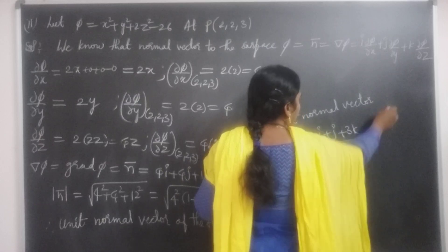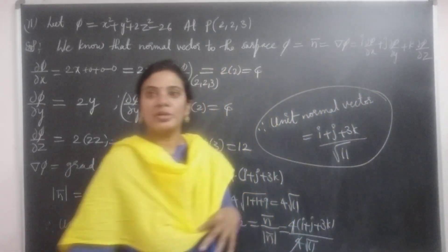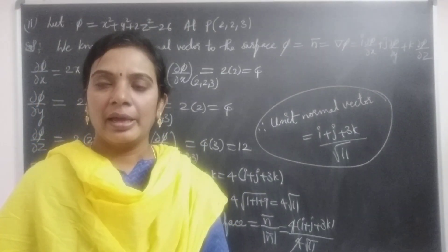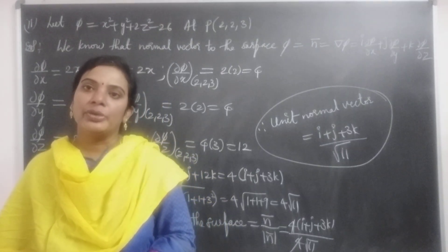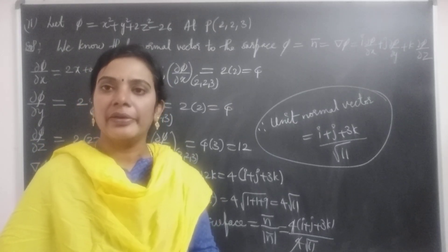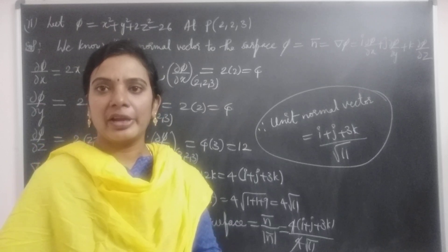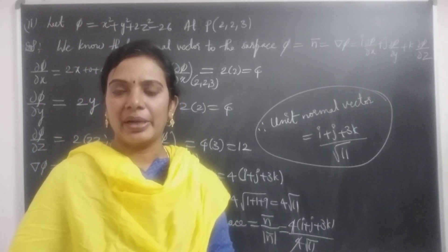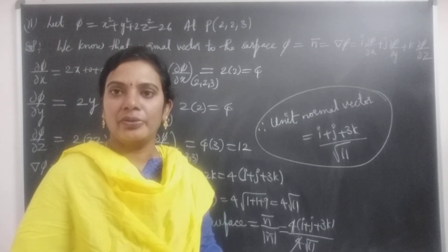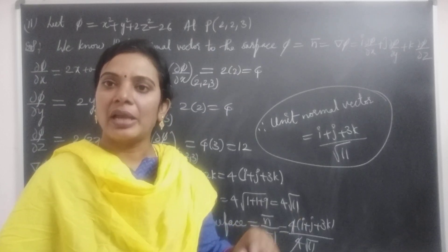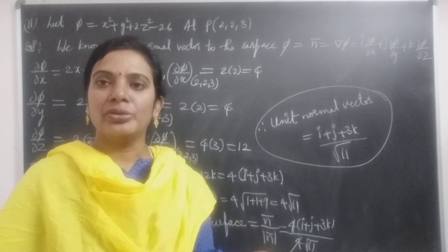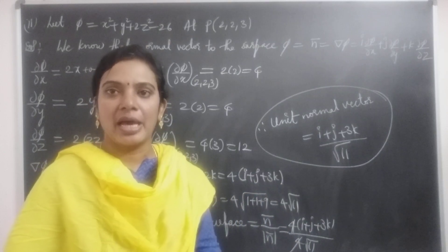This is the procedure to find out the unit normal vector. Just find the normal vector in the form del φ, that is grad φ = i ∂φ/∂x + j ∂φ/∂y + k ∂φ/∂z. Find those values at the given particular point, substitute them in, find out the magnitude, then substitute in the unit normal vector formula.